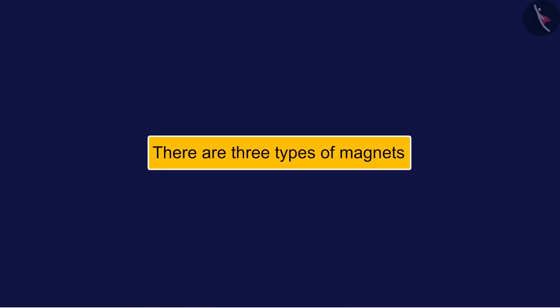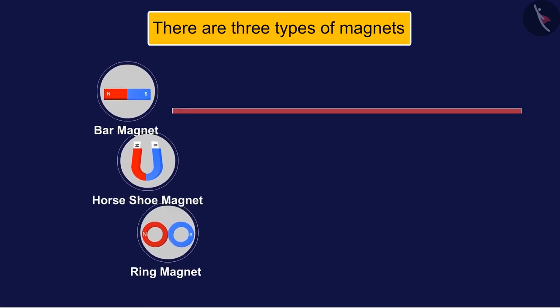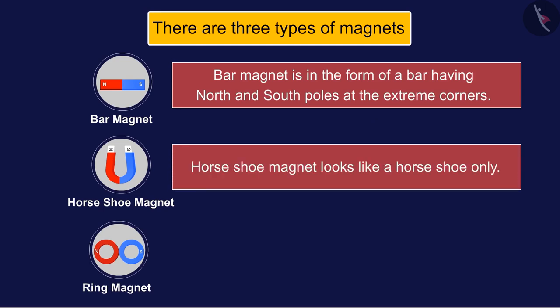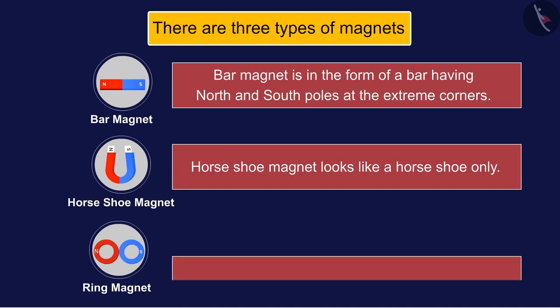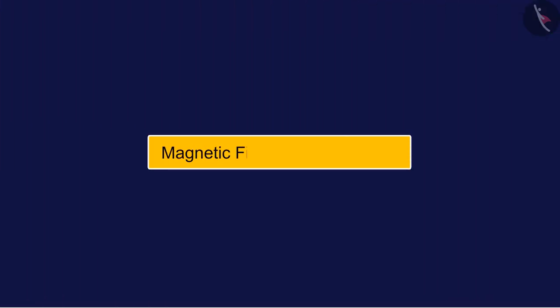There are three types of magnets we see: bar magnet, horseshoe magnet, and ring magnet. A bar magnet is in the form of a bar having north and south poles at the extreme corners. A horseshoe magnet looks like a horseshoe. Similarly, the shape of a ring magnet is like the shape of a ring.